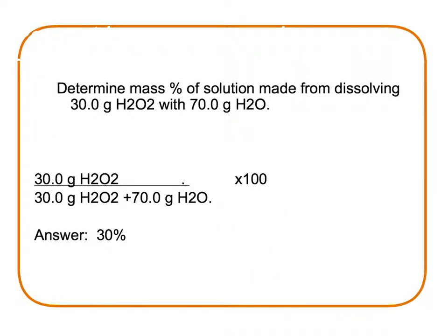Here we have a problem where we were asked to determine the percent mass of a solution made from dissolving 30 grams of peroxide with 70 grams of water. We take our 30 grams of peroxide, divide that by the 30 grams plus 70, which is our mass of solution. We multiply that times 100, and we have a percent by mass of 30%.